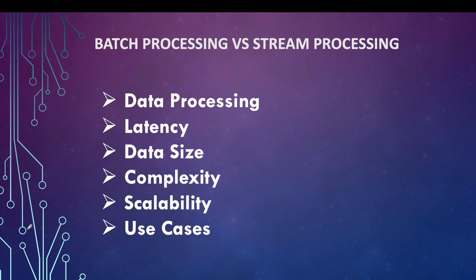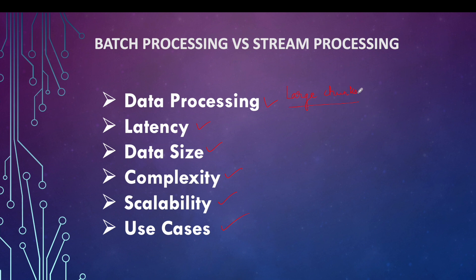Now let's look at features that segregate batch from stream processing. On the screen you can see features like data processing, latency, size, complexity, scalability, and use cases. For data processing, batch systems handle large chunks of data, while in stream processing the data may be one event at a time, micro-batch, or maybe 100 events.